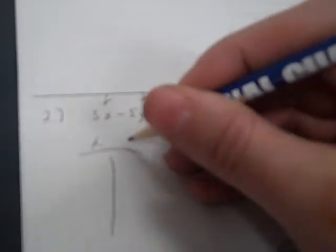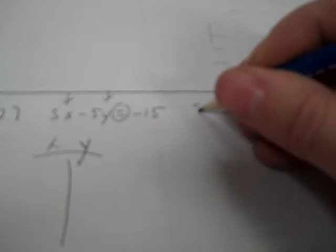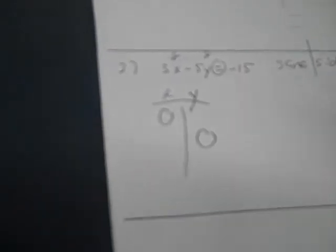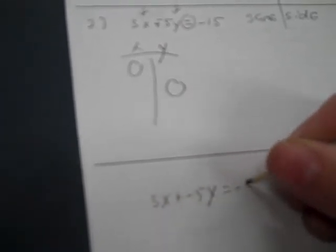So number 2, 3x minus 5y equals negative 15. Now think about it. Are the x and y on the same side or are they on opposite sides? They look to me like they're on the same side. So the best way to graph it is to find the double zero with the x and y-intercepts. So I'm going to make that plus negative 5y and I'm going to write 3x plus negative 5y equals negative 15.